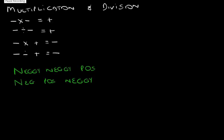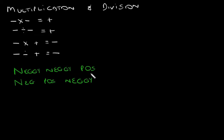Now when we do multiplication and division, we should know that a negative times a negative is a positive, and a negative divided by a negative is a positive. A negative times a positive is a negative, and a negative divided by a positive is a negative. I like to use 'negi negi pos, negi' — in other words, a negative divided or multiplied by a negative will always give you a positive, and a negative divided by or multiplied by a positive will always give you a negative.